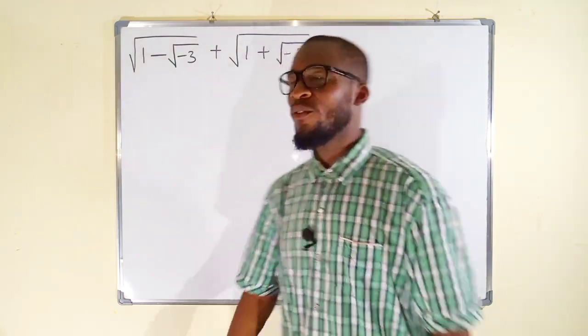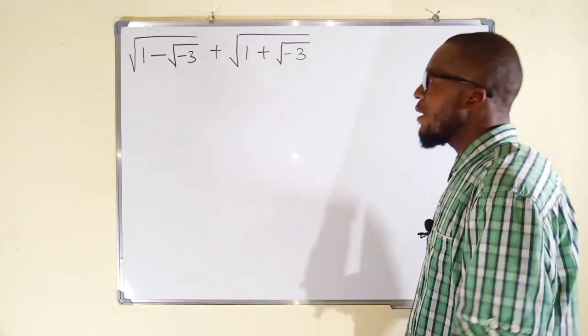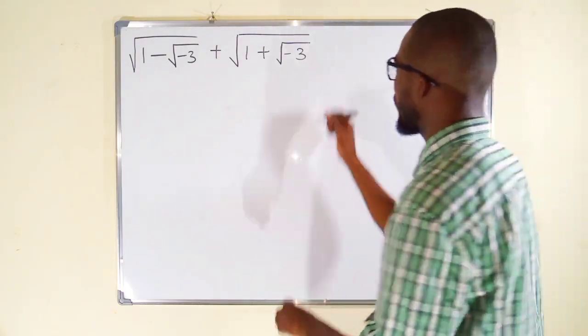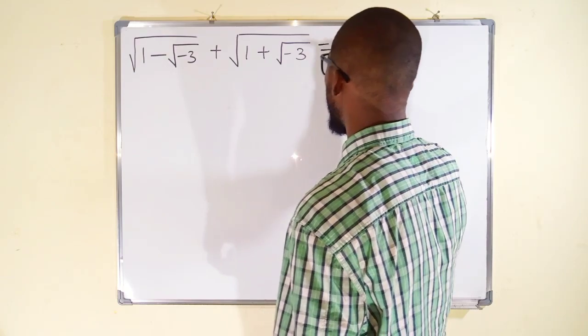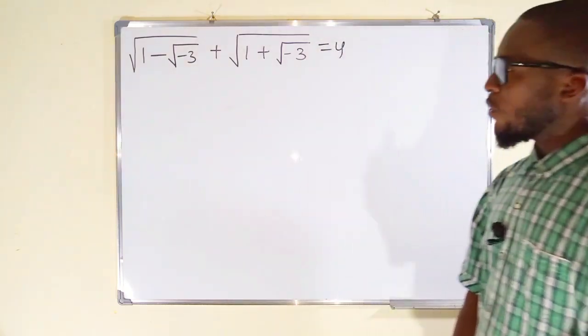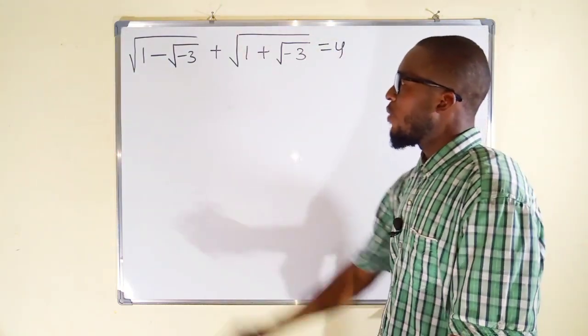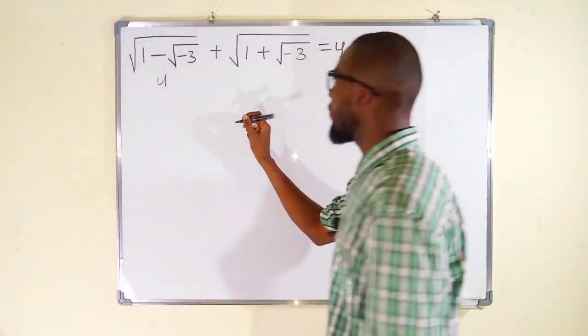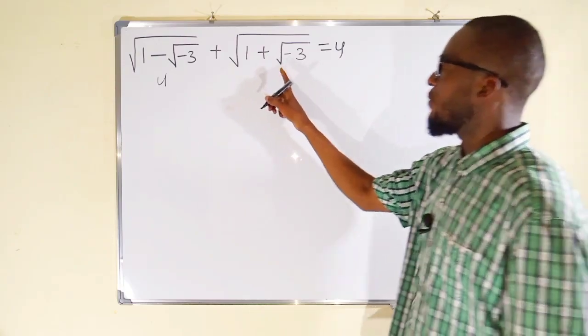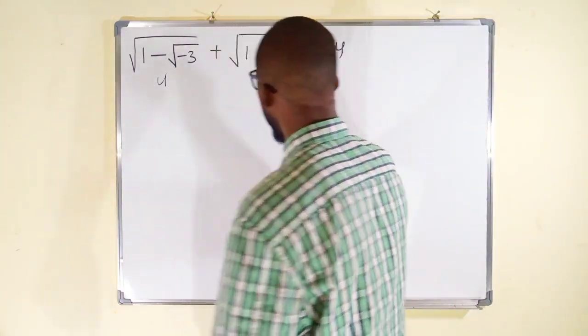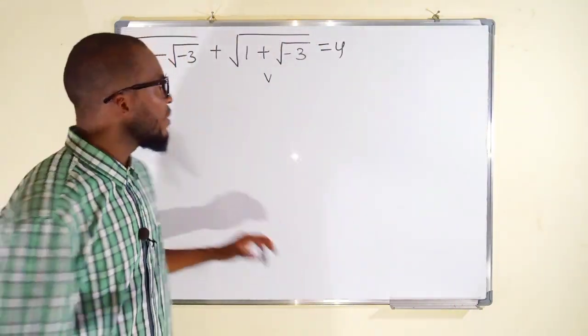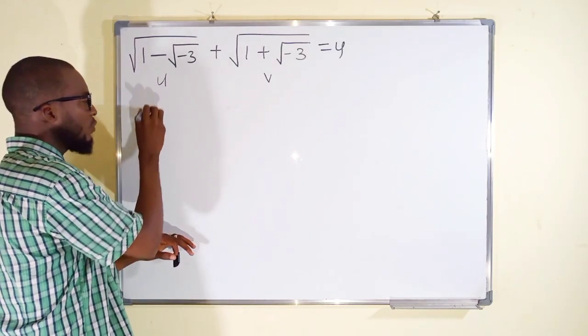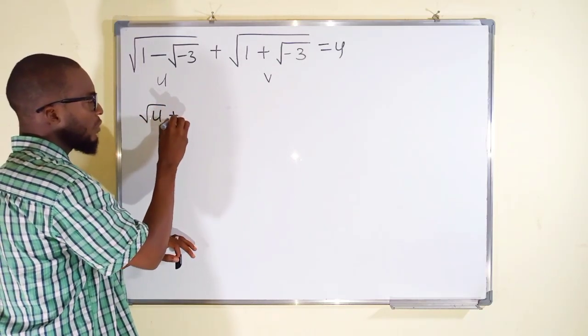If you're ready, let's continue. I like substitution, so let us set everything here to be equal to y. Secondly, I want to set 1 minus √(-3) to be u, and I want to set 1 plus √(-3) to be v. This means that √u + √v = y by substitution.